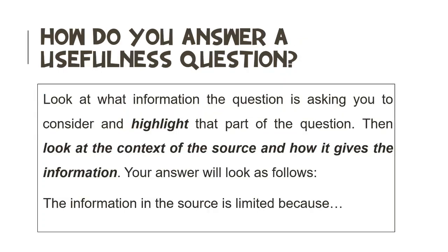Now that we know how to identify a Level 3 Limitations question, how do we answer it? You look at what information the question is asking you to consider and then you highlight that part of the question. Then you look at the context of the source and how it gives the information. Your answer will look as follows: you will start the sentence with 'The information in the source is limited because' and then you will explain why.